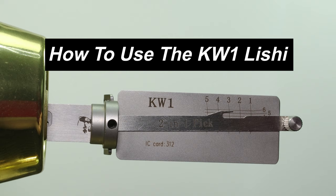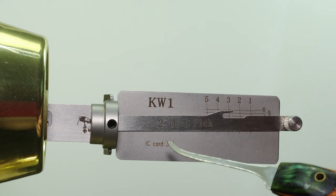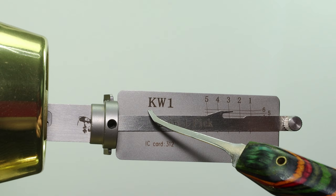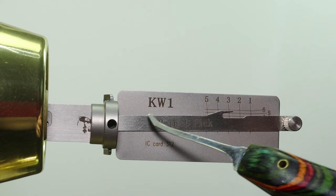What the tool is is the Lishi Pick and Decoder tool. Why this tool is so powerful is that it can be found in some of the most common residential keyways that you can find in North America. What we have in front of us here is going to be the Kwikset KW-1. You can also find it in the Kwikset KW-5, the Schlage SC-1, SC-4, American Lock AM5, and the Best A keyway.